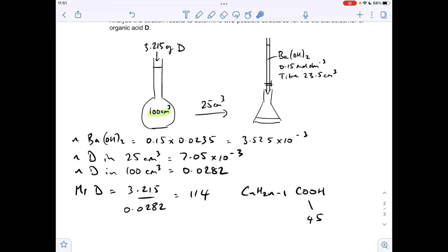We were told at the top of the question that this is the general formula for D. So if the COOH part has a mass of 45, the whole thing, 114, the difference is obviously this bit here, which comes out at 69. So the formula for the acid must be C₅H₉COOH.